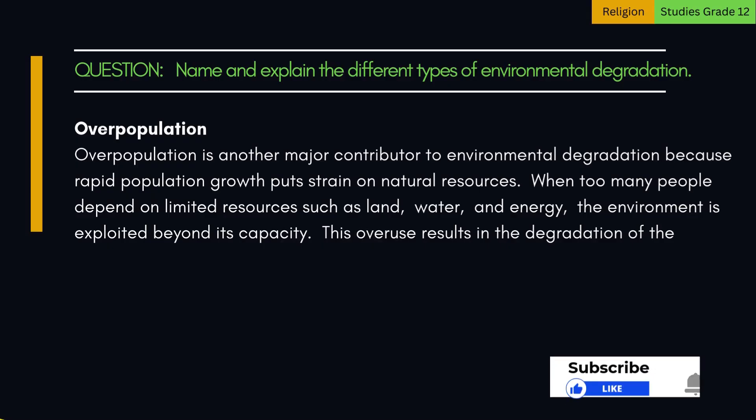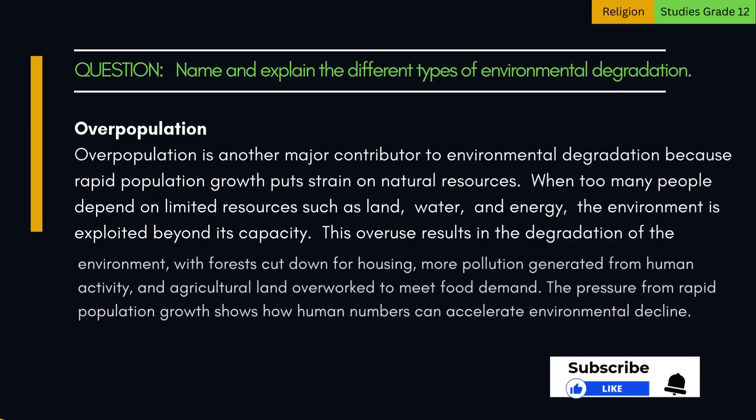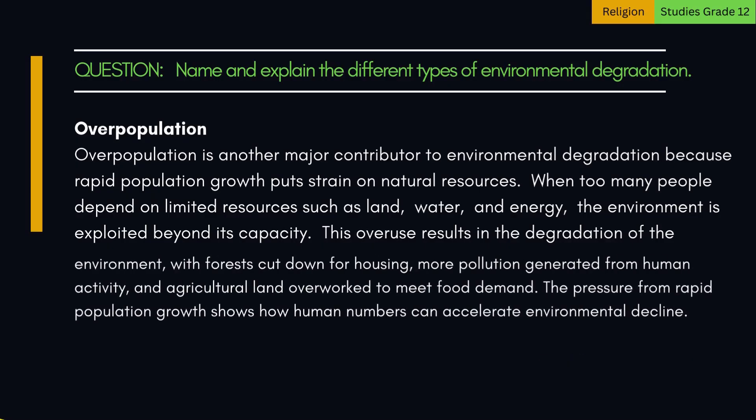This overuse results in the degradation of the environment, with forests cut down for housing, more pollution generated from human activity, and agricultural land overworked to meet food demand. The pressure from rapid population growth shows how human numbers can accelerate environmental decline.